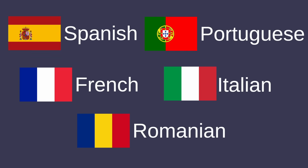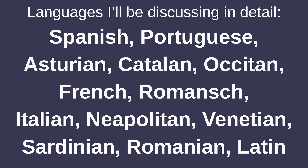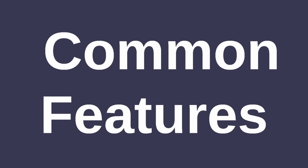The most prominent Romance languages are Spanish, French, Portuguese, Italian, and Romanian. There are plenty of other smaller Romance languages spoken across Europe as well. I'll be talking about 13 Romance languages in detail, and all the rest will at least get a mention. With that introduction out of the way, let's talk about some common features among Romance languages.